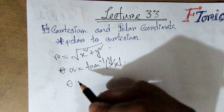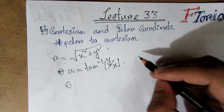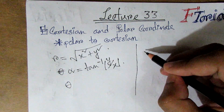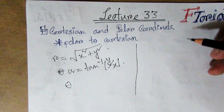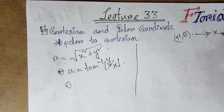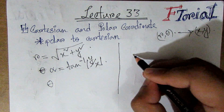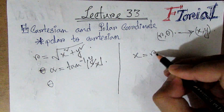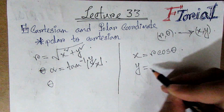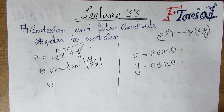Then we have the polar to Cartesian formulas. So x is equal to r cos theta, and y is equal to r sin theta. It is easy to do the polar to Cartesian conversion.